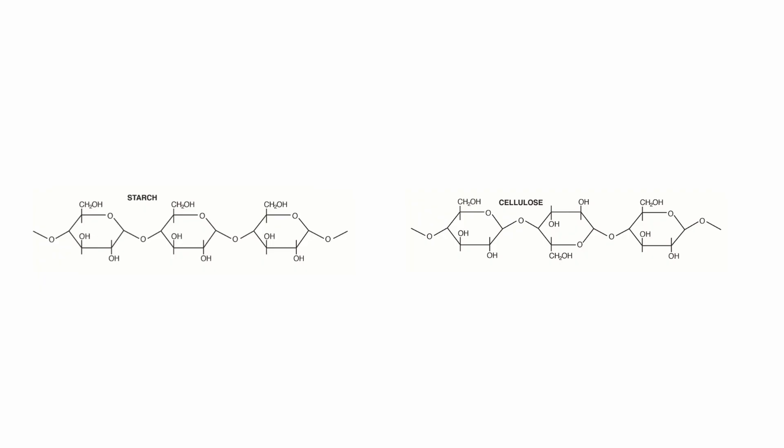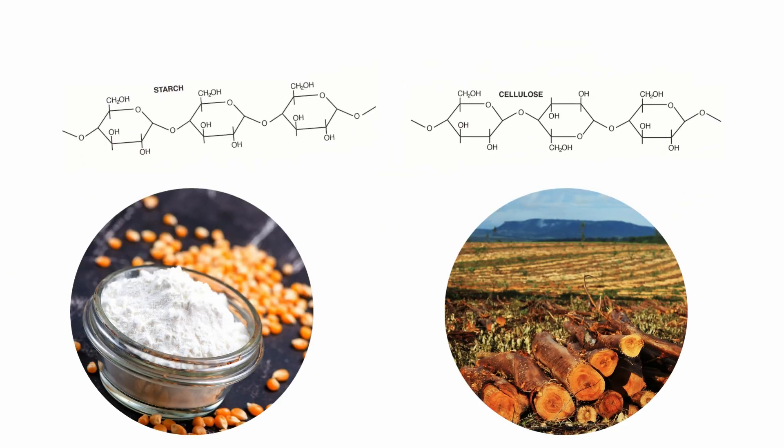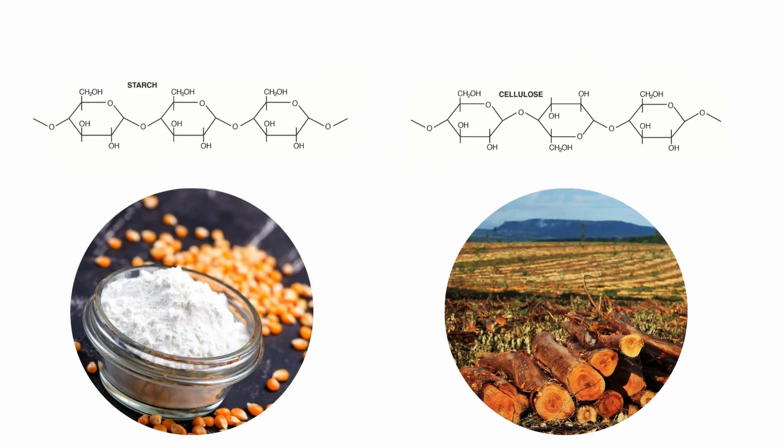So, starch, which is the first structure shown in this slide, is a polymer of 1,4-linked alpha-D-glucose units. Cellulose, which is the second structure, consists of beta-D-glucose units with 1,4-linkages. These differences contribute to making starch a digestible polymer that yields 4 kilocalories of energy per gram, while cellulose is a linear and unbranched molecule that's not digested by humans.